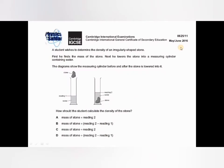This question is from the May/June 2016 series. A student wishes to determine the density of an irregularly shaped stone. First he finds the mass of the stone. Next he lowers the stone into a measuring cylinder containing water. The diagram shows the measuring cylinder before and after the stone is lowered into it. How should the student calculate the density? This is the method used for finding the density of an irregularly shaped object.